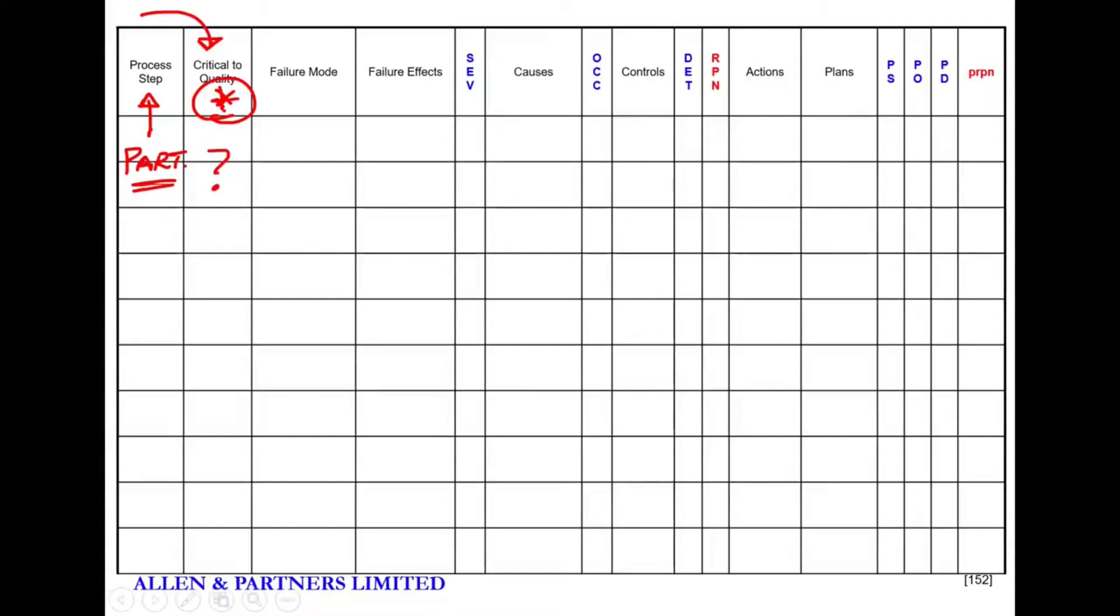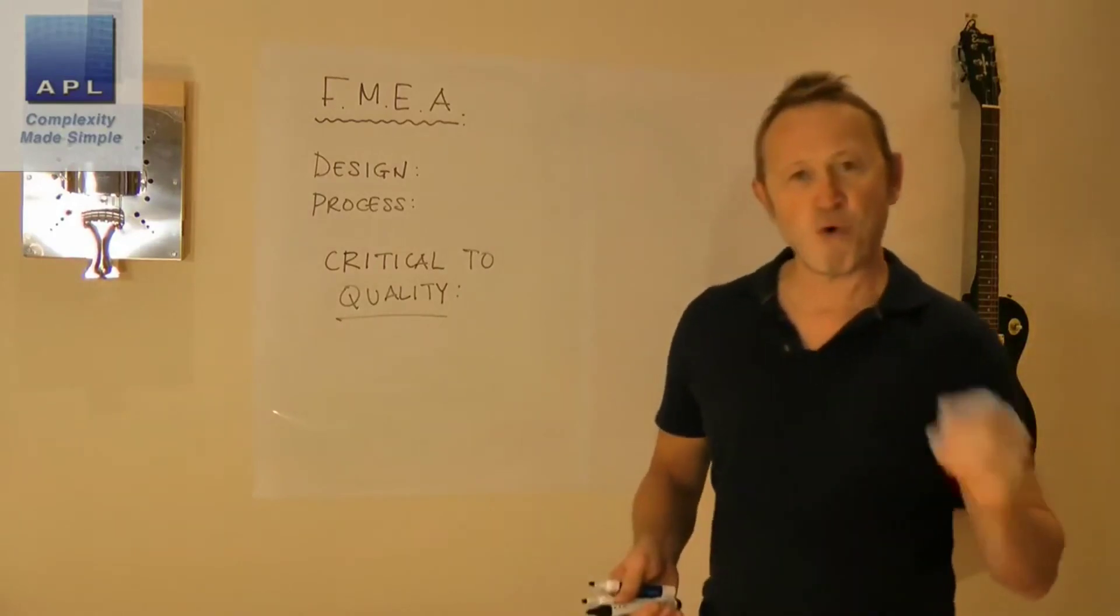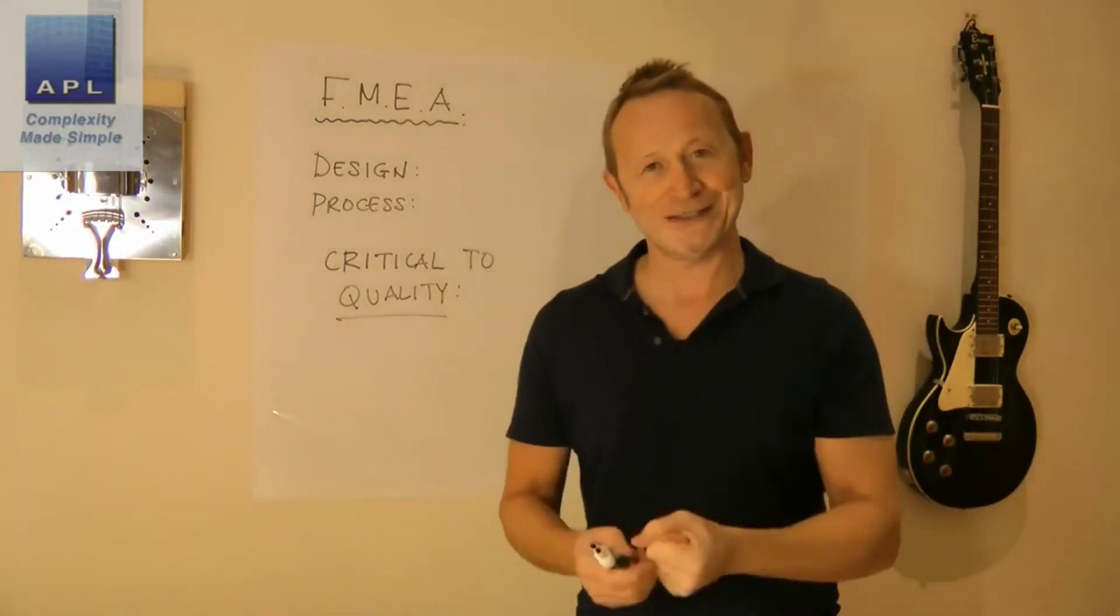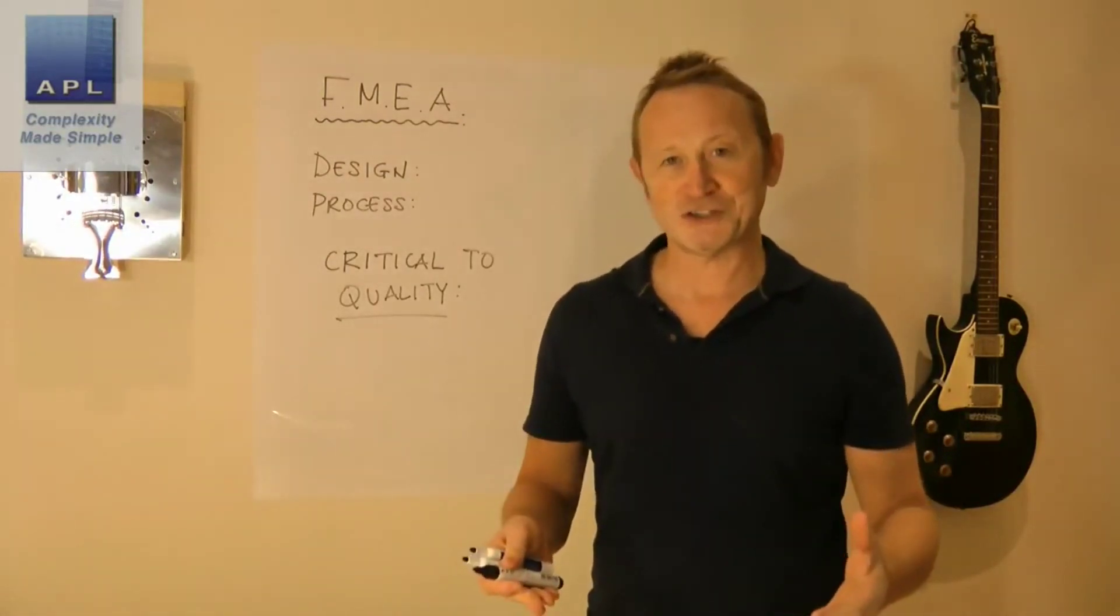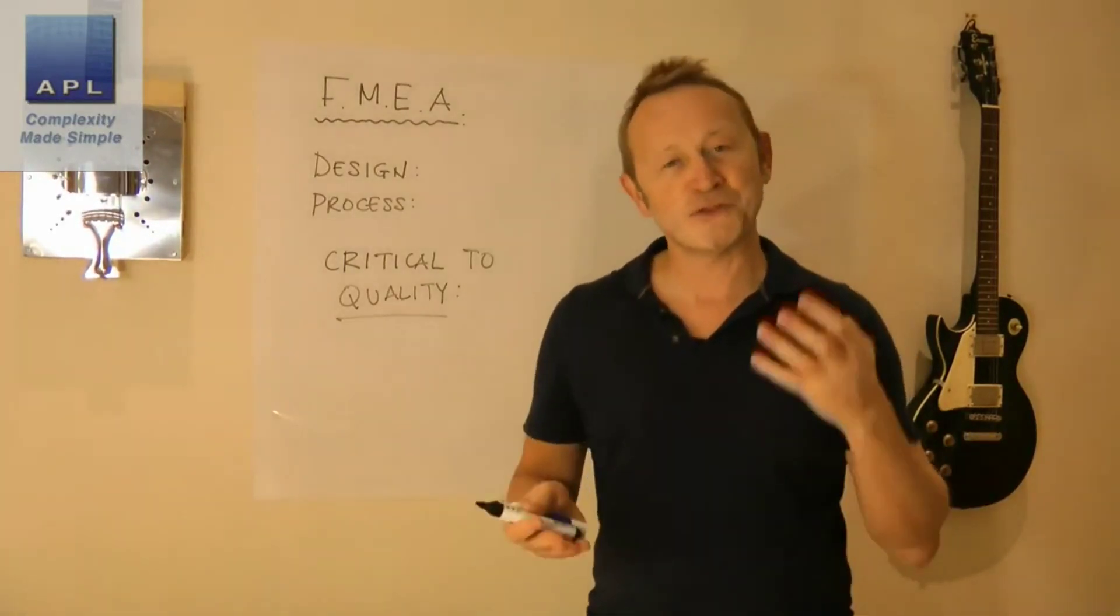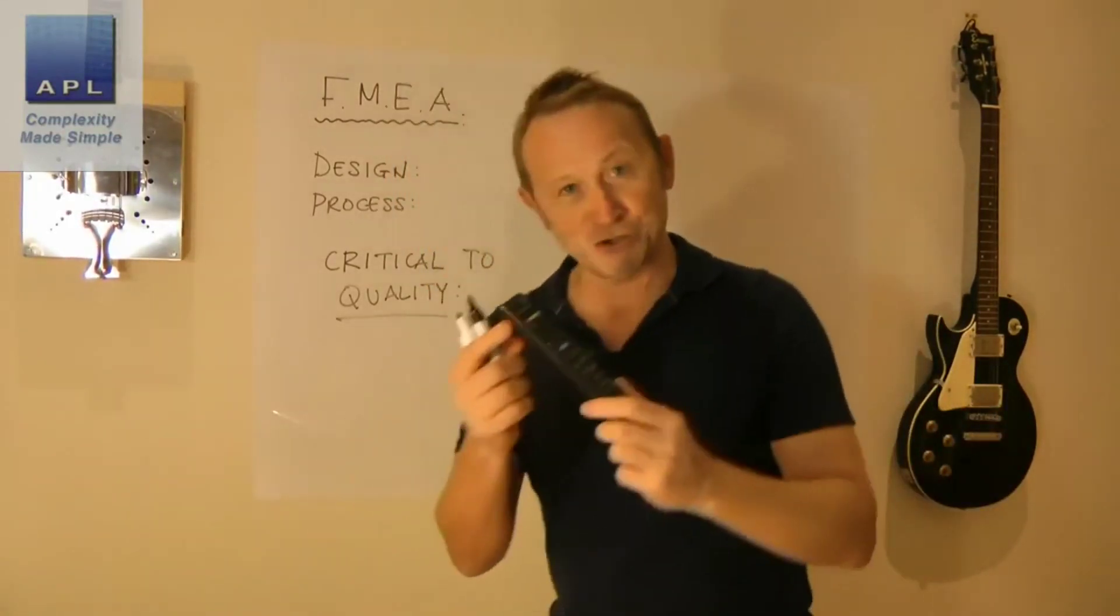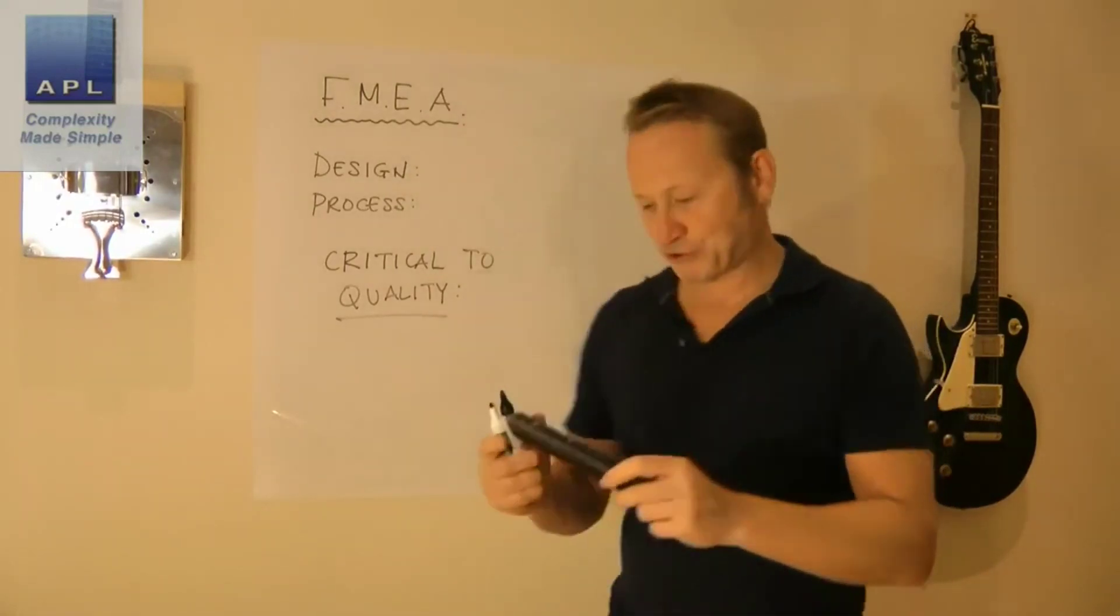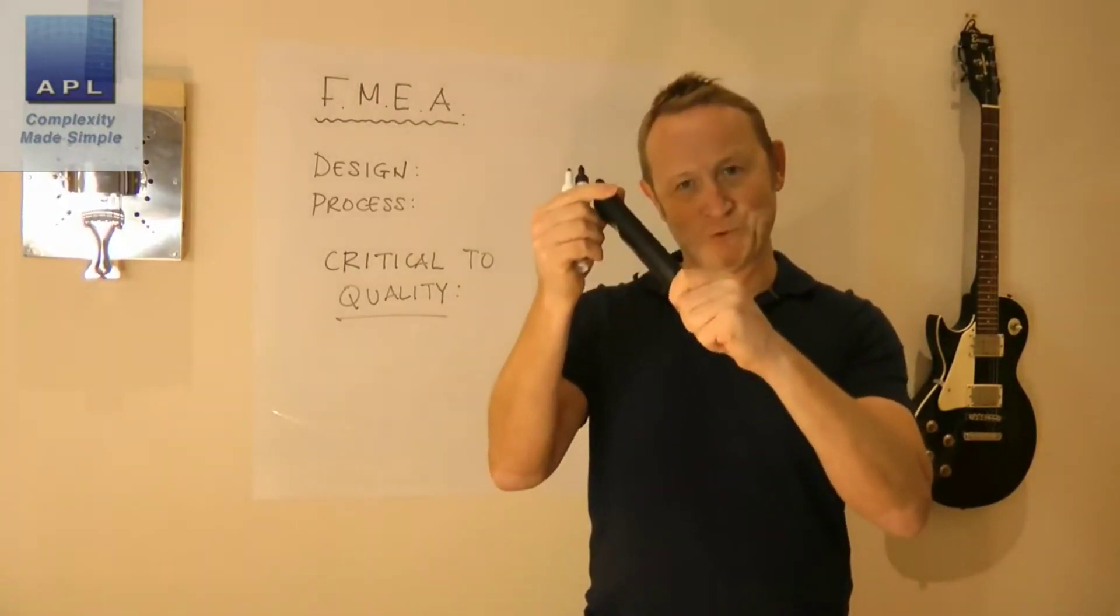You'll notice that the second column over says 'What is Critical to Quality?' and this is really important. What the Design FMEA is going to do: it's going to capture the designer's intent. Why did he design the product the way he did? Why did he come up with tolerances the way he has? That's what this thing's going to do. Not just come up with tolerances, not just come up with raw materials—it's going to come up with the reason why he did it.